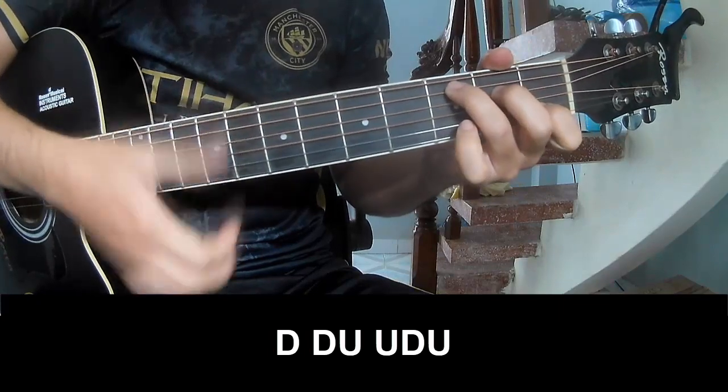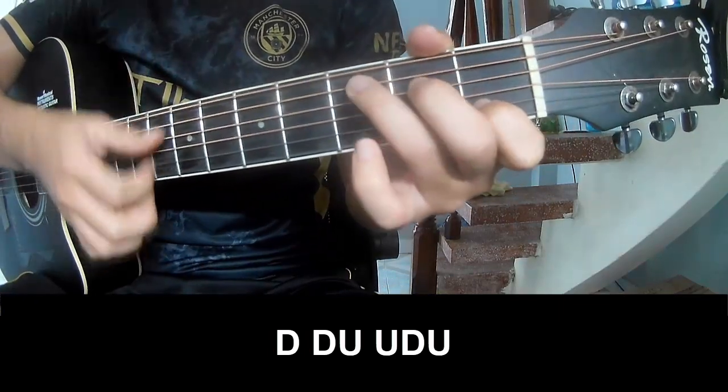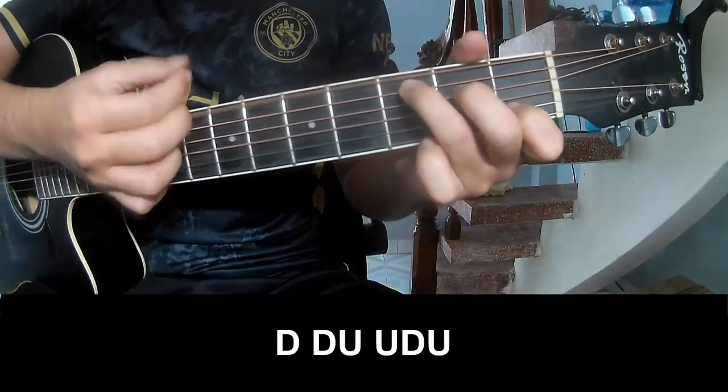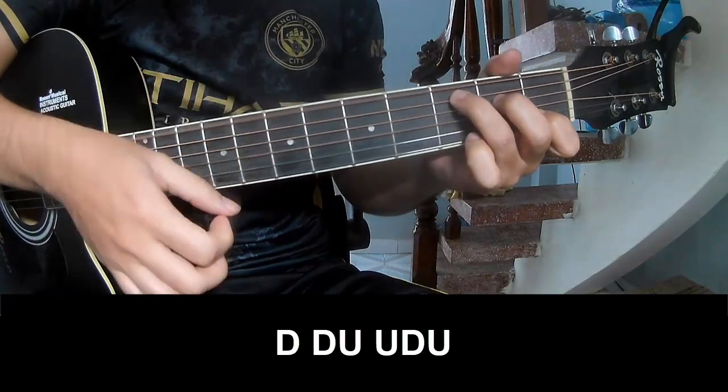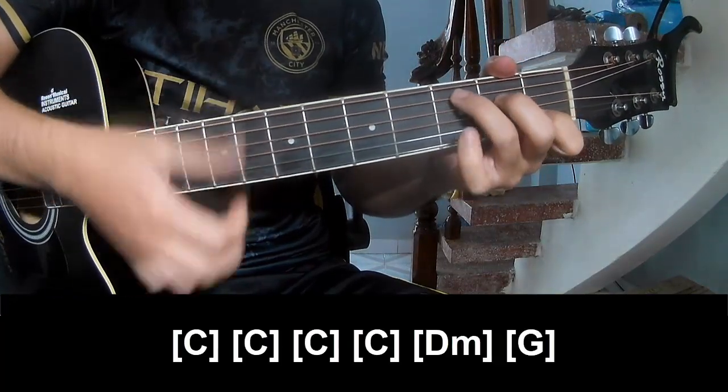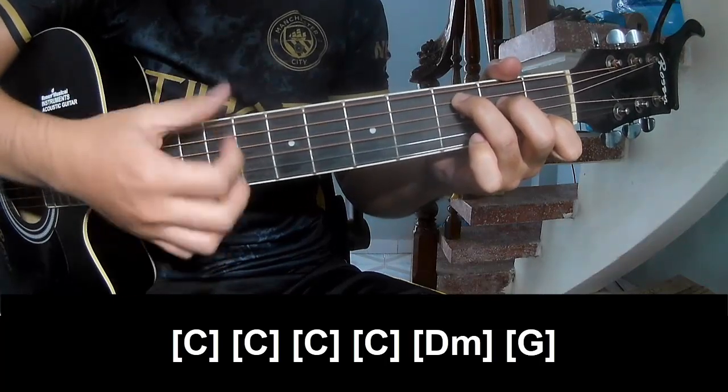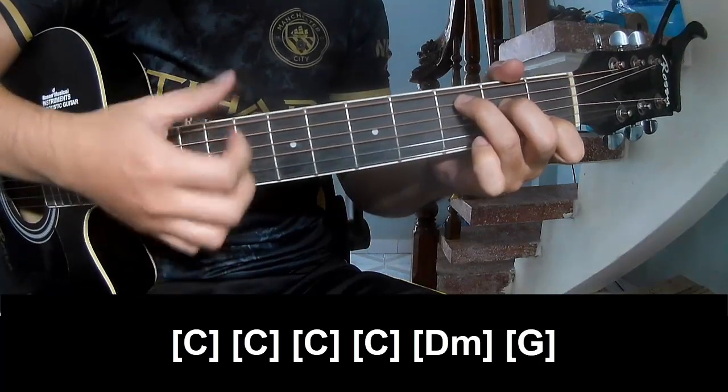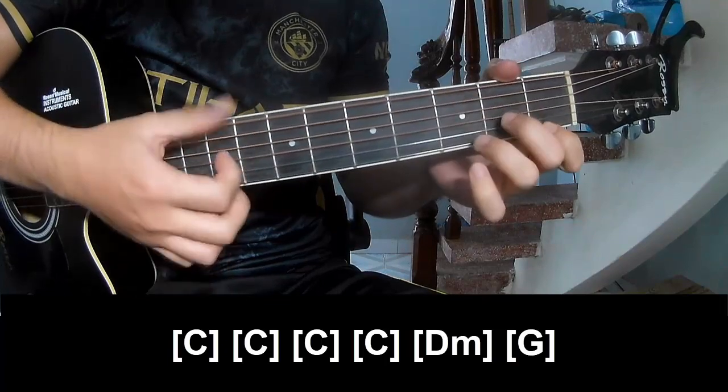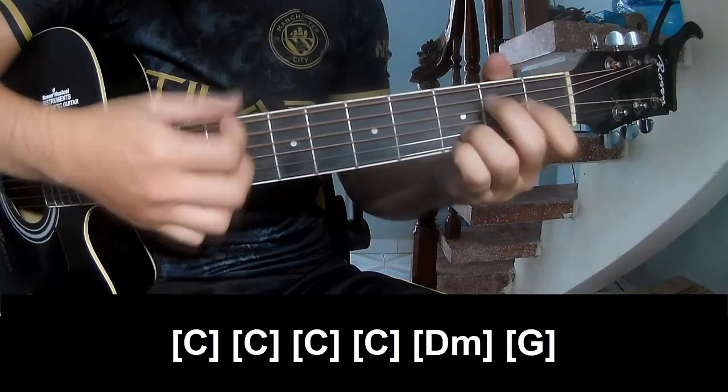Starting with the first note on capo, play the pattern repeatedly. Now the chords: G, C, D, F, G.